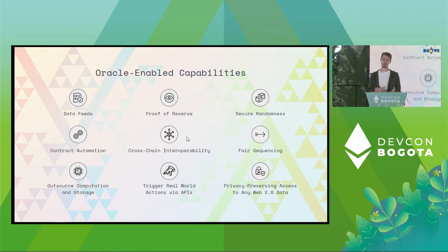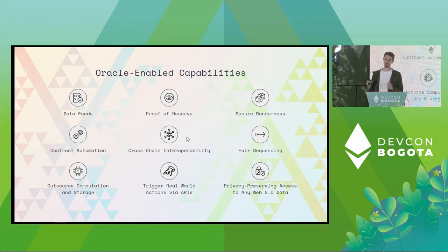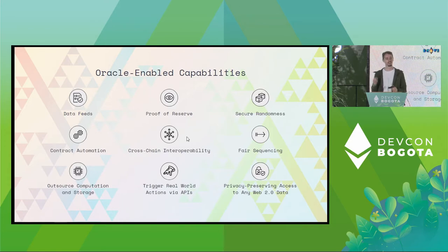I can outsource computation and storage so that I can enable contracts to scale beyond what the EVM provides. As much as we all love the EVM and as much fun as gas golfing is, there are some things that are just a little bit hard to do on the EVM. I can also enable oracles to perform real-world actions. We had a hackathon a couple of months ago inside Chainlink Labs where we had contracts ordering pizza via the Pizza Hut API to people's houses.